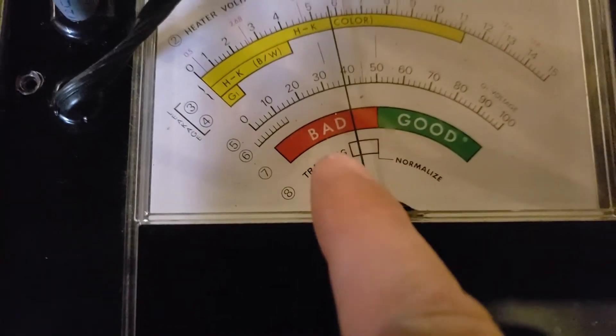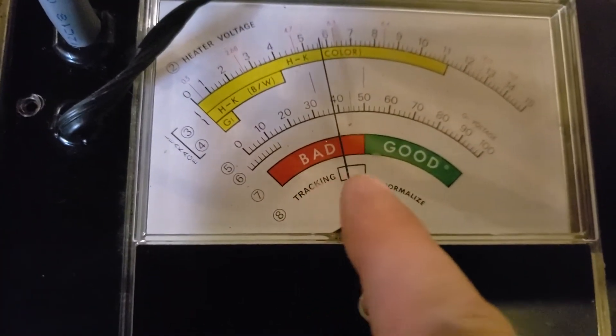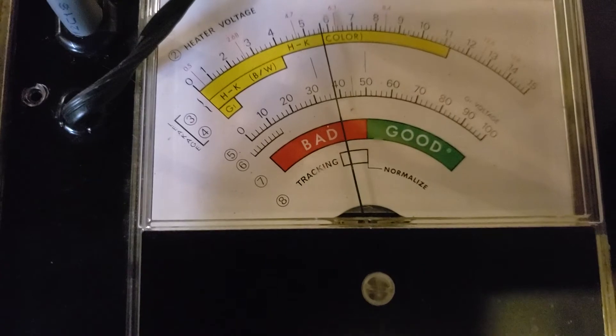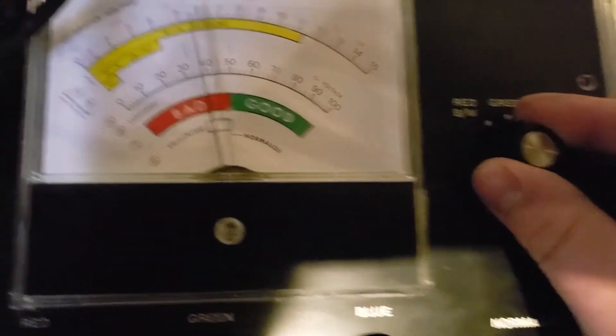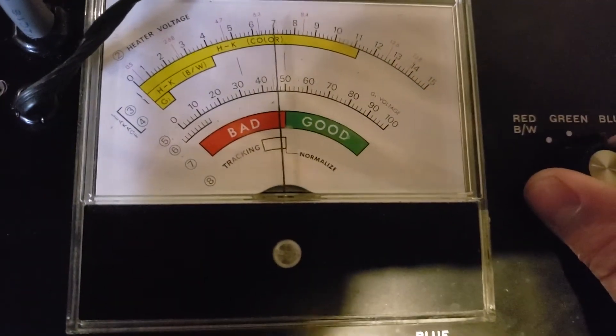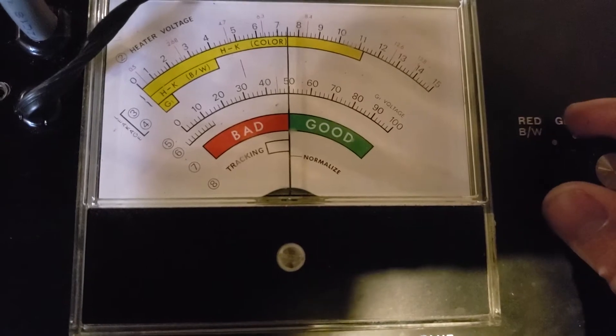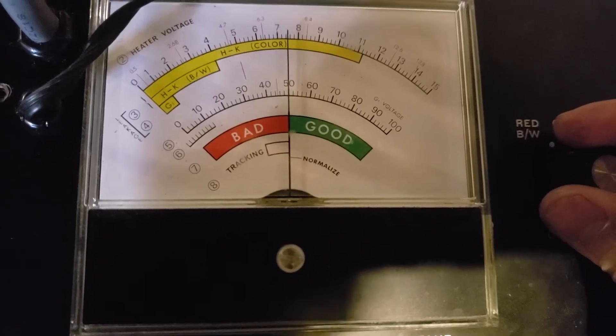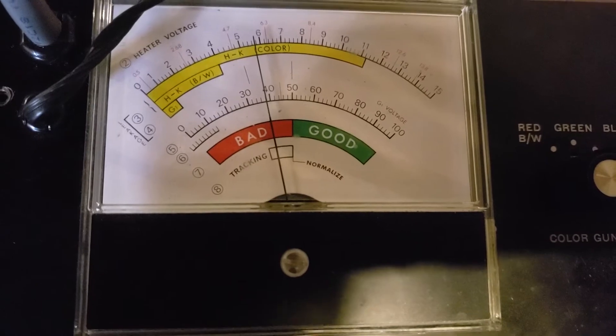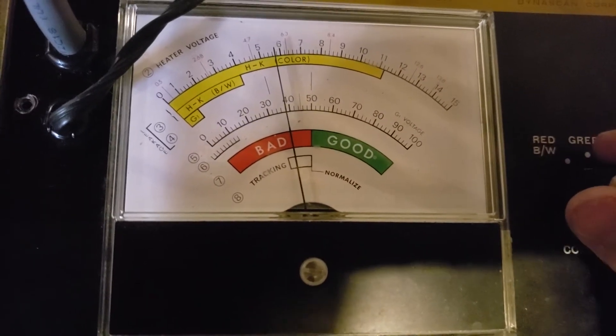We want to make sure all three guns stay within that box right there. So we'll go - one, it's on red. We'll go to green, it's on the high side but it's still there. And we'll go to blue and it's still within the box. So we have good color tracking.